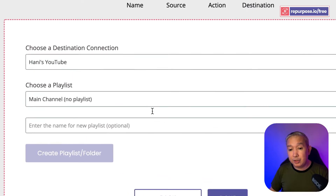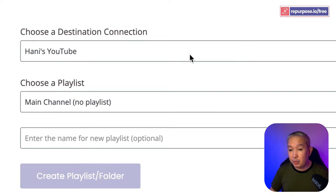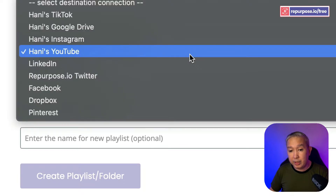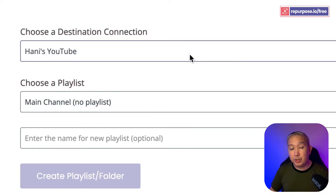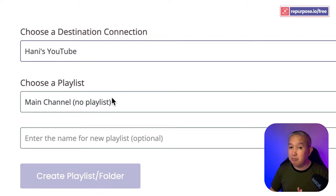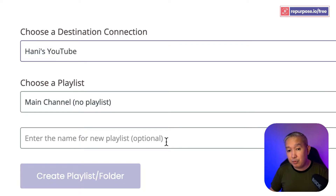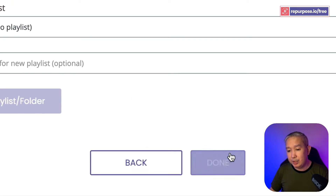Now for your destination, we're going to choose YouTube from our list. But we're going to choose YouTube. If you have a playlist you want to put it there, go right ahead. If not, it's fine — or you can also create a playlist from the Repurpose.io interface. Just click Done.